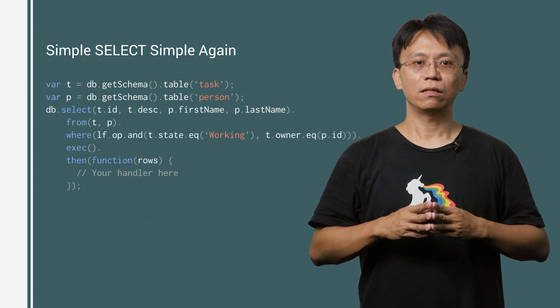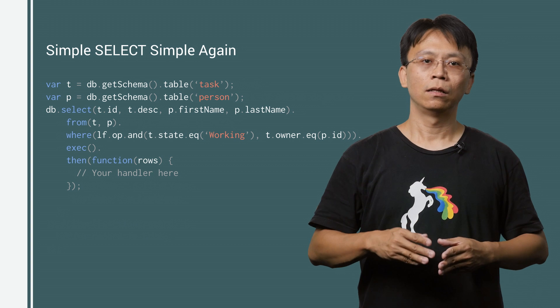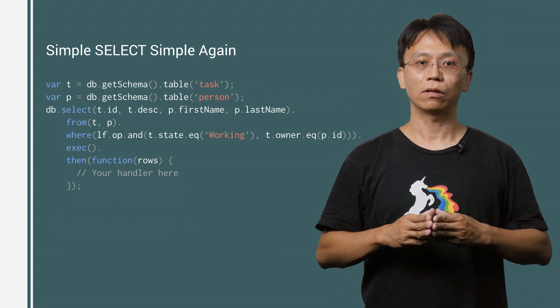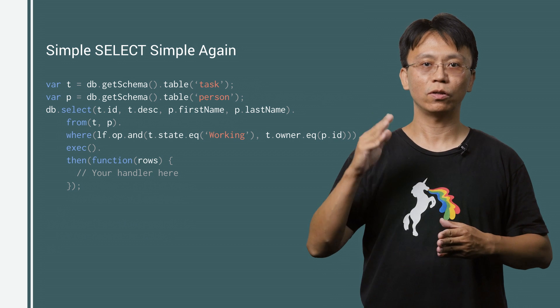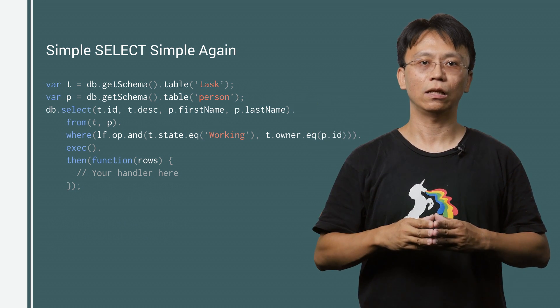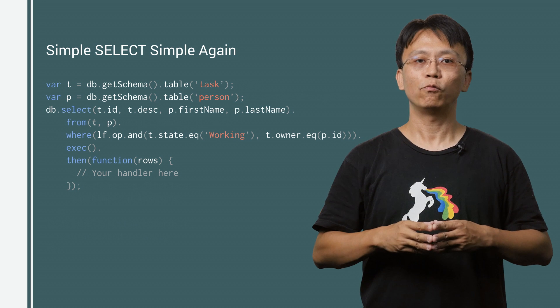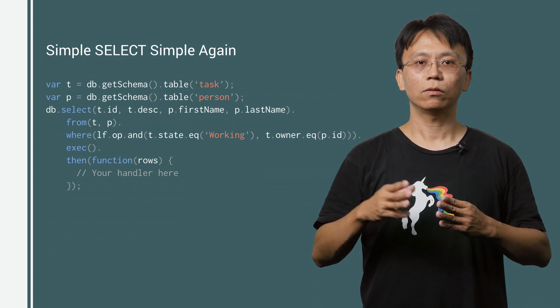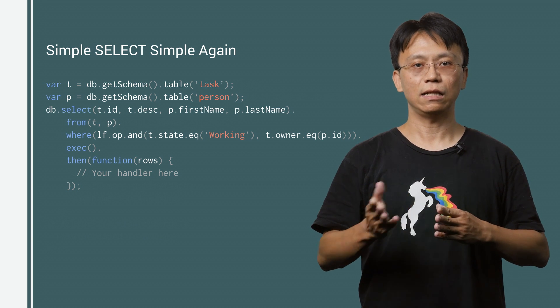Lovefield is designed to make the simple select simple again. In Lovefield, we describe data type of table in schema. To construct a query, we first retrieve the schema by calling the getSchema function of the database connection. Then we construct our query using the builder pattern, which is very similar to SQL's select statement and easy to learn.